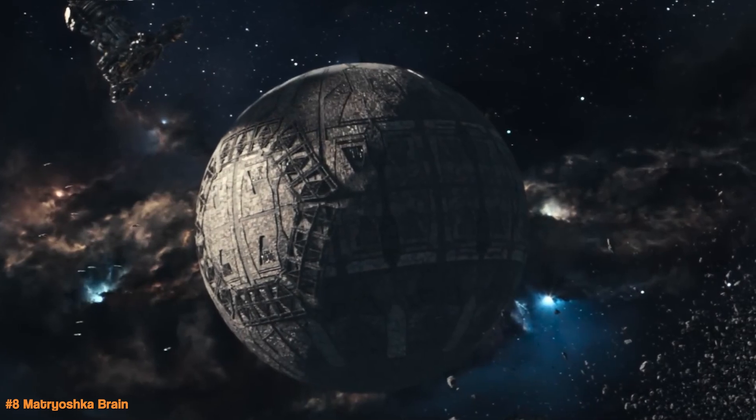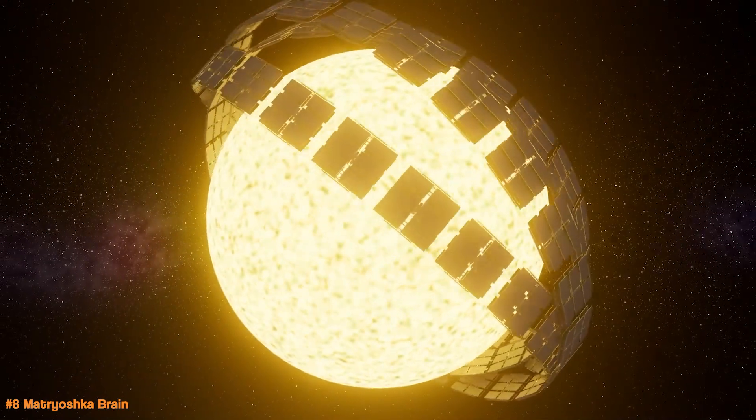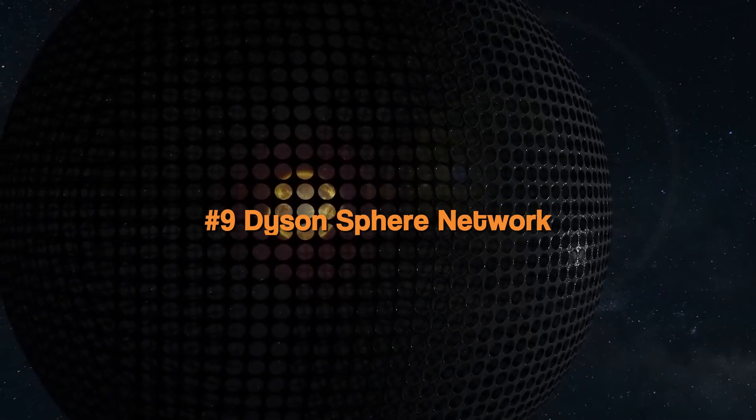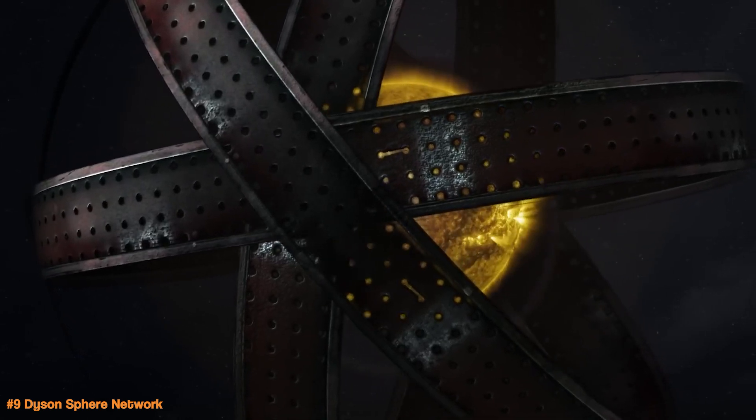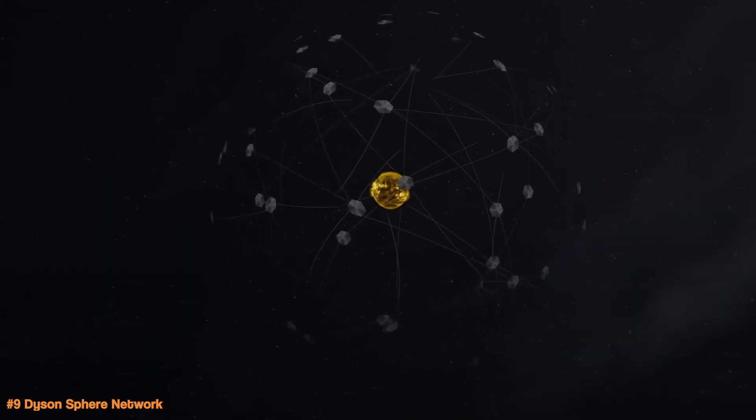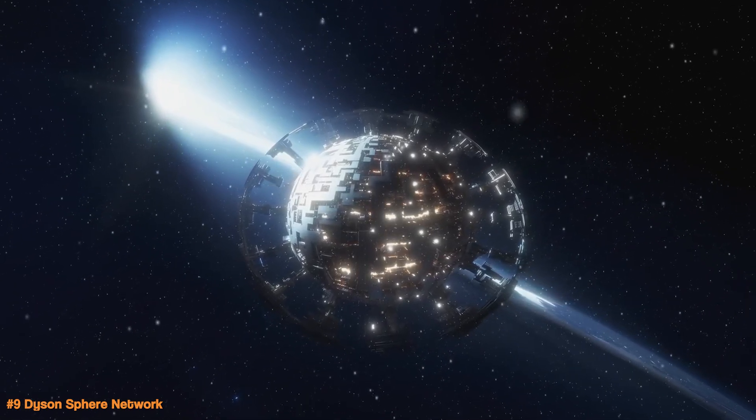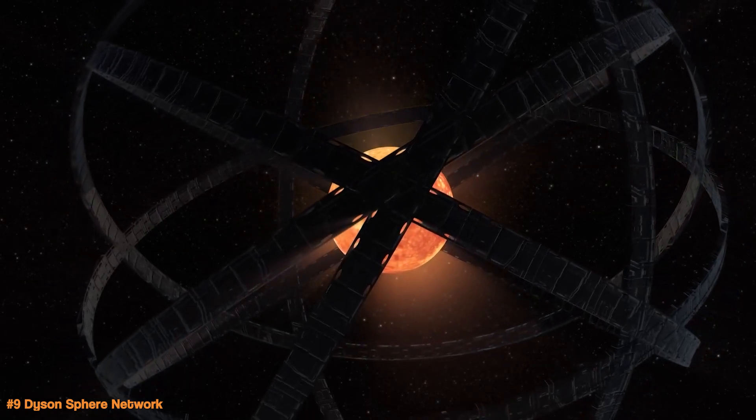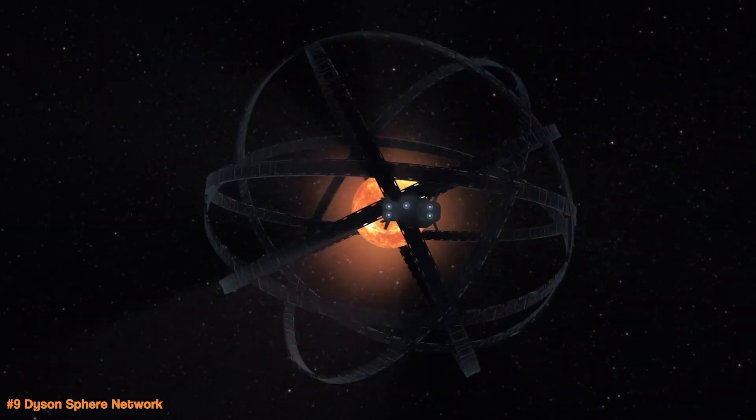As we advance, we will eventually build a second Dyson sphere around another sun, which is where we will start a Dyson sphere network. A Dyson sphere network is a concept where multiple Dyson spheres, or similar structures, are built around many stars in a galaxy to capture energy on a massive scale. Instead of just one Dyson sphere around a single star, a network would involve connecting many energy harvesting structures spread across the galaxy, each designed to gather and store the star's energy.